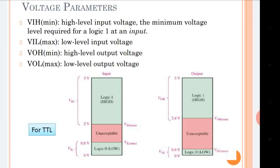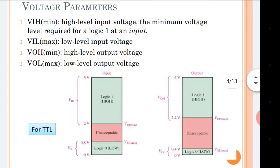The same concept applies for the output — instead of VI you write VO. For the TTL family, VOL is 0.4 volt, meaning it is the maximum value of the low level output voltage which is considered as logic low. VOH minimum is the minimum value of the high level output voltage which is considered as logic high; if the value is below this, it will not be considered as a high value.